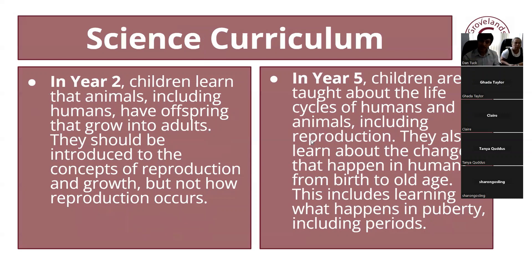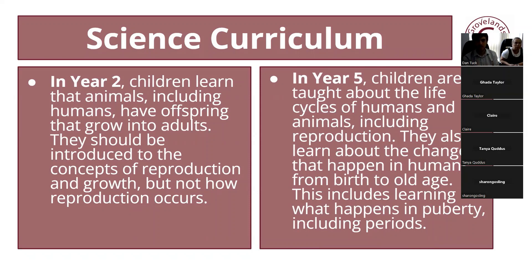What is the science curriculum? In year two, children have already learned that animals, including humans, have offspring that grow into adults, and they're introduced to the concept of reproduction and growth, but not actually how it happens. In year five, the science content is that children are taught about the life cycles of humans, and that includes reproduction. They learn about specific changes that happen to humans, including puberty and periods. It's in the national curriculum because these are changes that are happening to many of the children now, so it's really important that they know about those changes. All children must learn this.